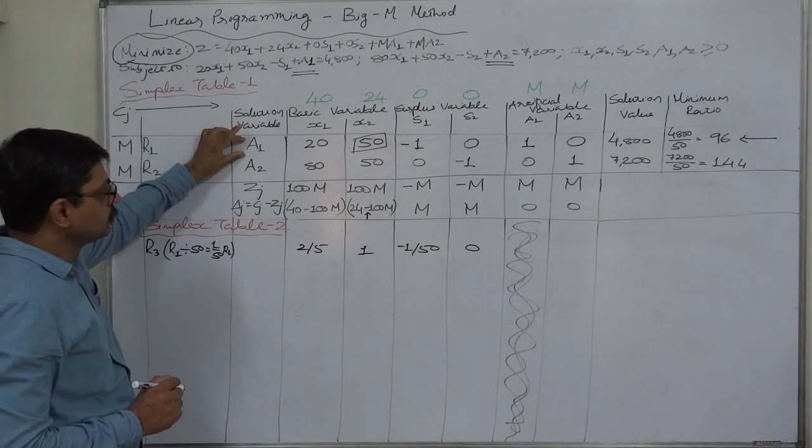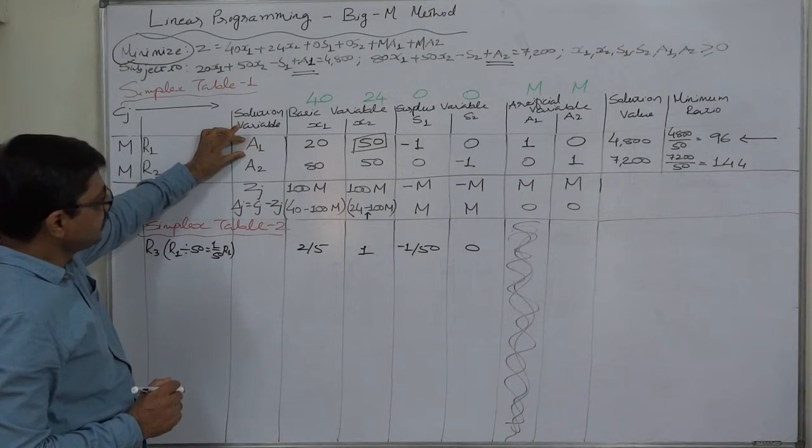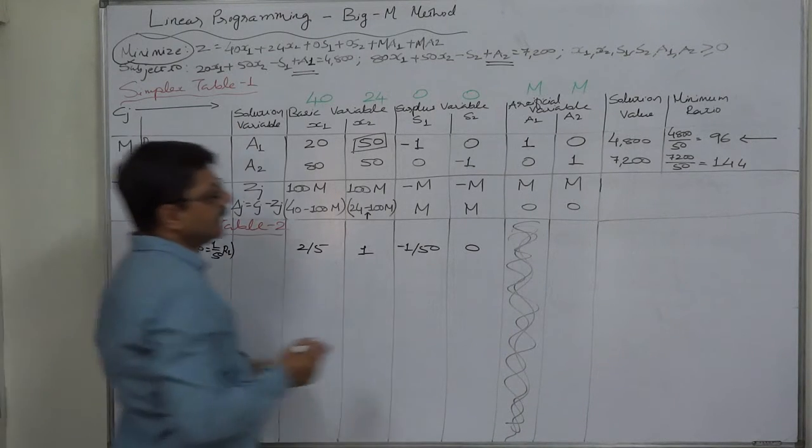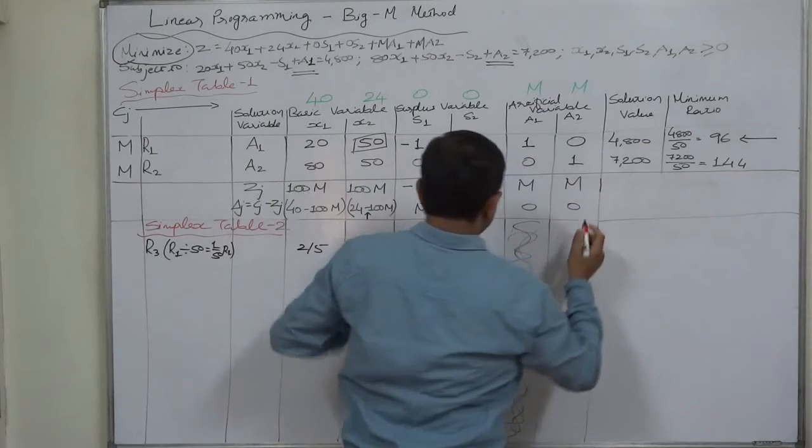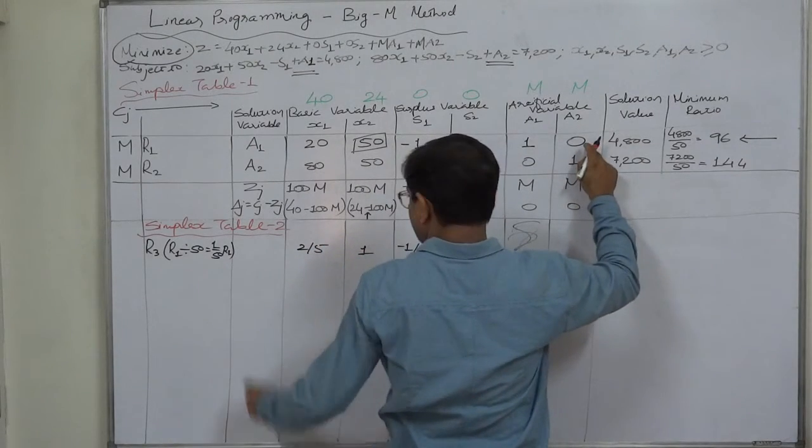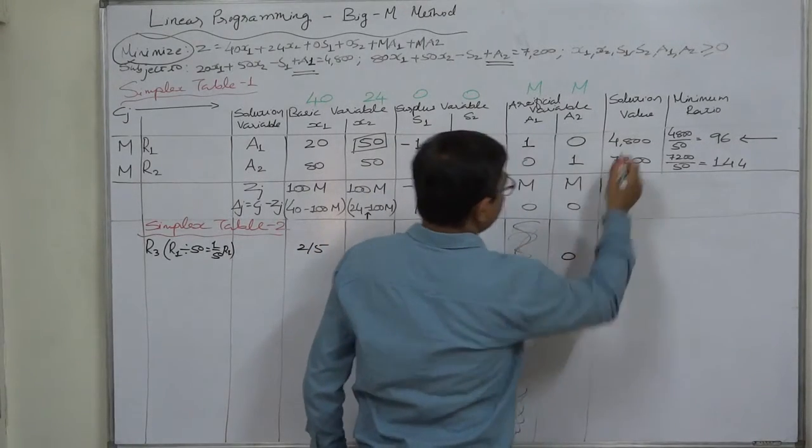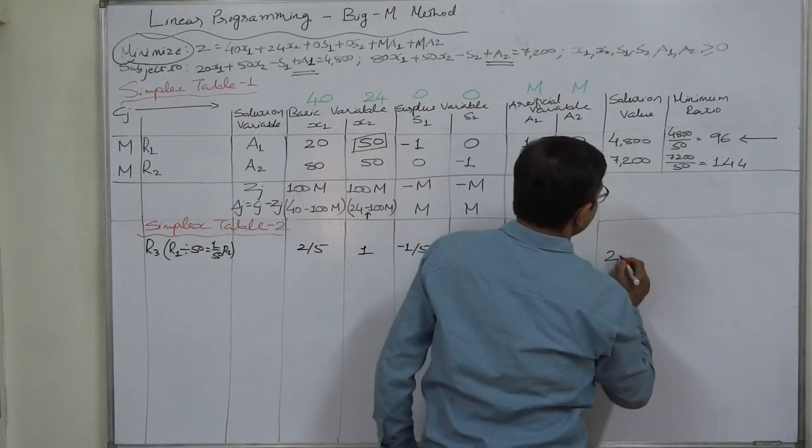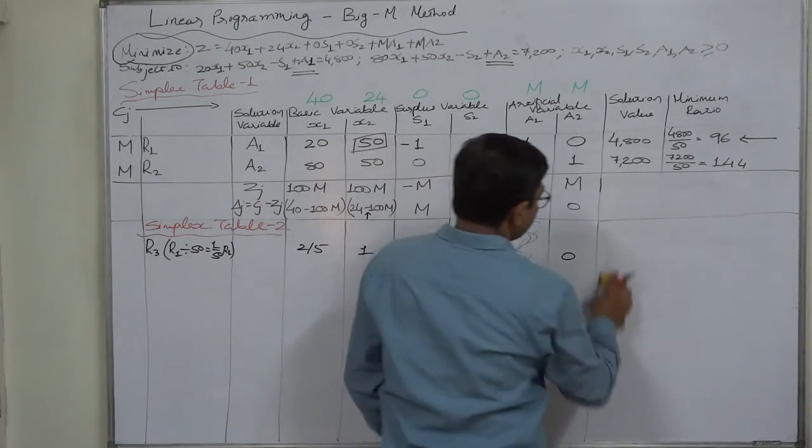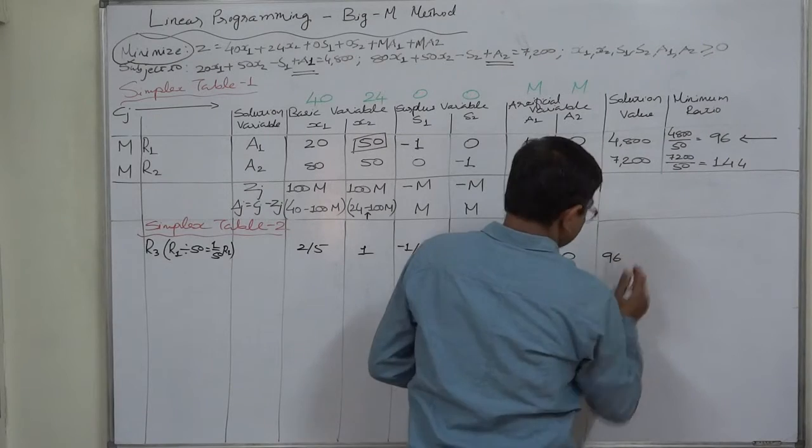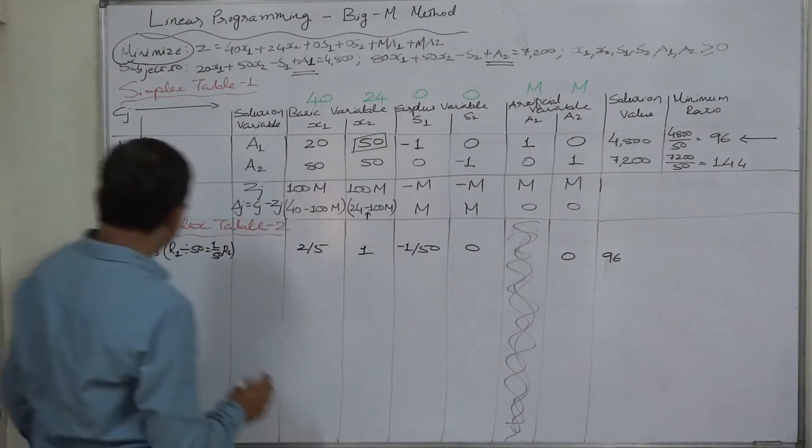We will have to change it, so no role of A1 is there now. 0 divided by 50 is 0, 96 divided by 50 is—sorry, 4800 divided by 50 is 96. Now the second row, that is r4, which will take the place of r2.